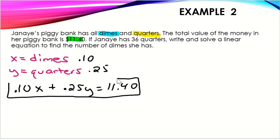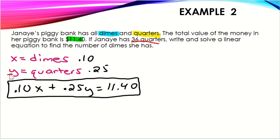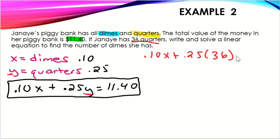That is our linear equation, and we can use it to find any amount of quarters or dimes. In this case we're given 36 quarters. Quarters are Y, so we plug 36 in for Y. The equation becomes: 0.10x + 0.25 times 36 = 11.40. Simplifying: 0.25 times 36 is 9. So we have 0.10x + 9 = 11.40.